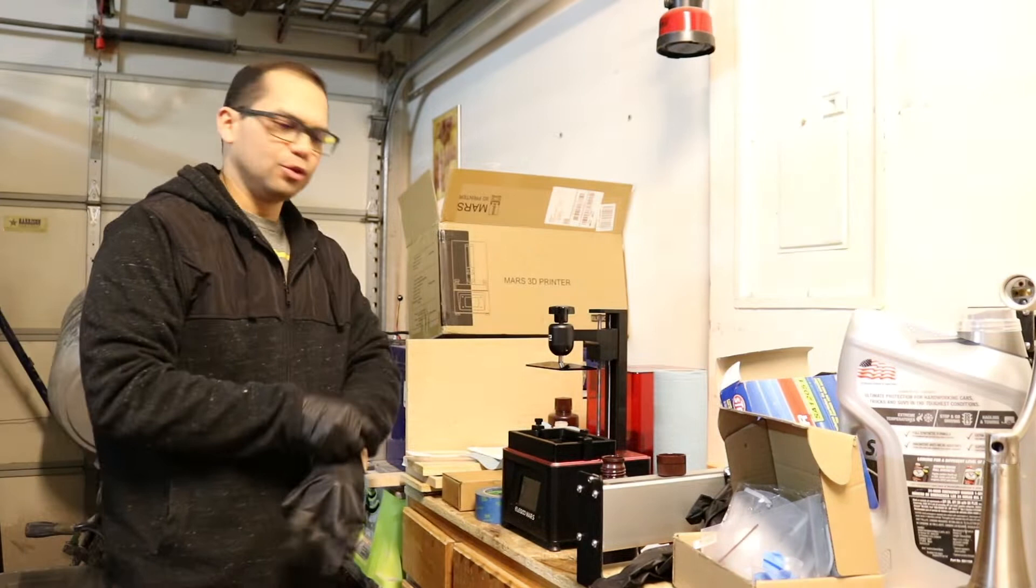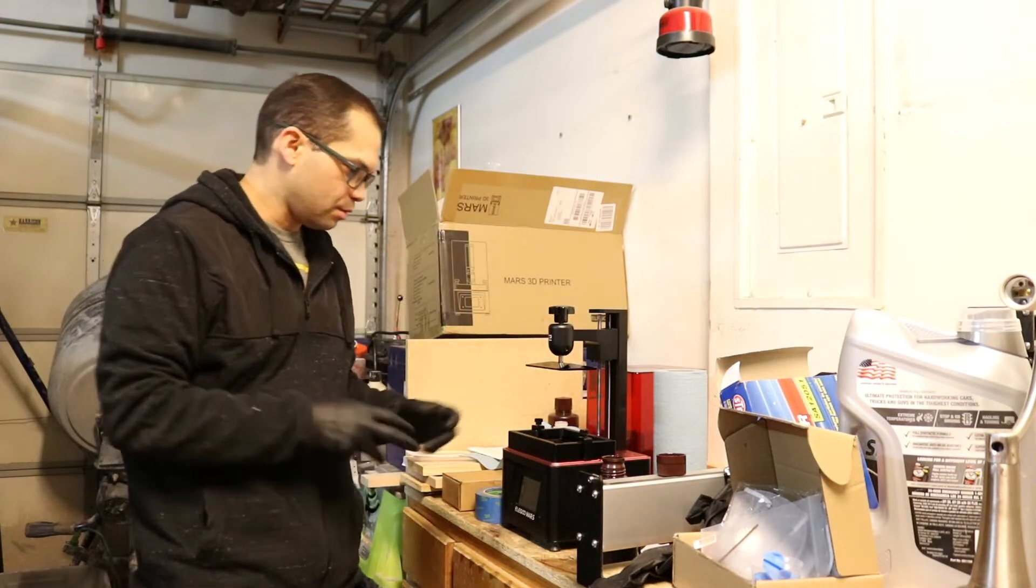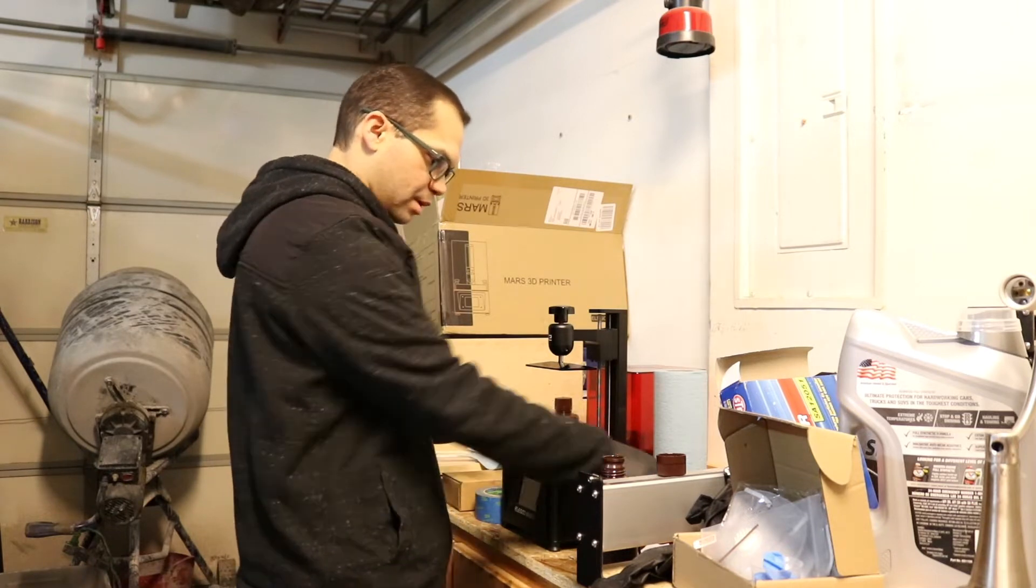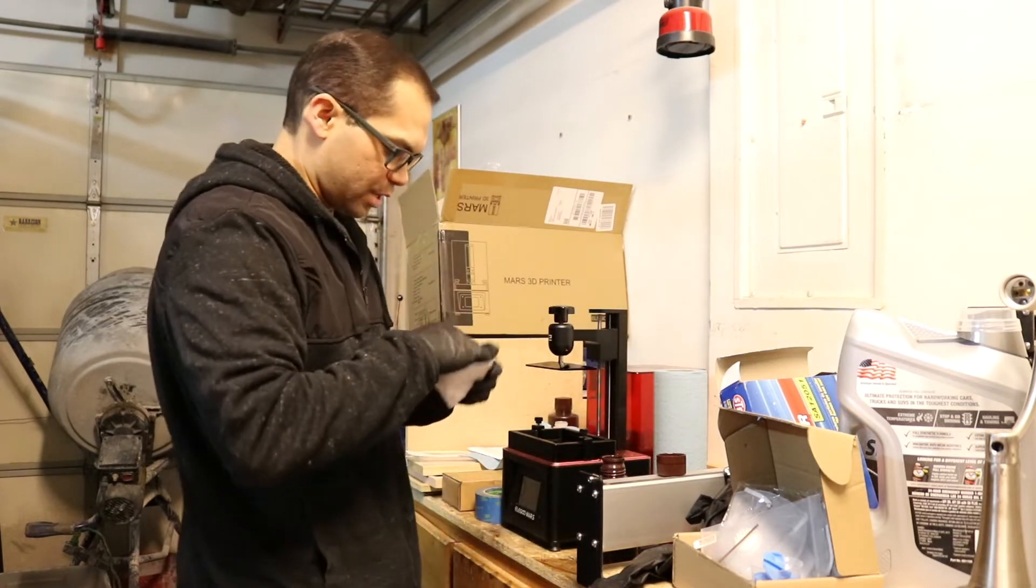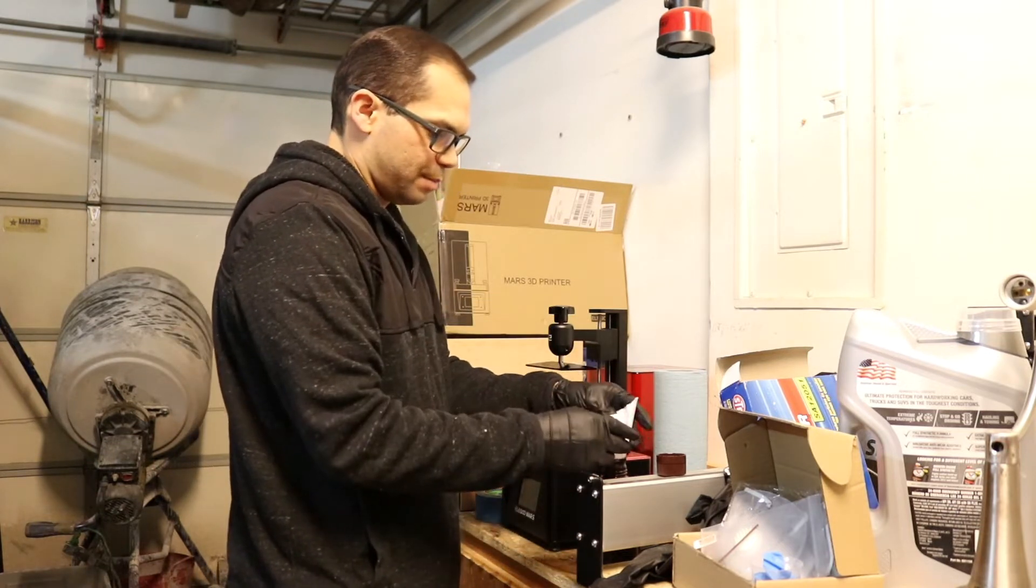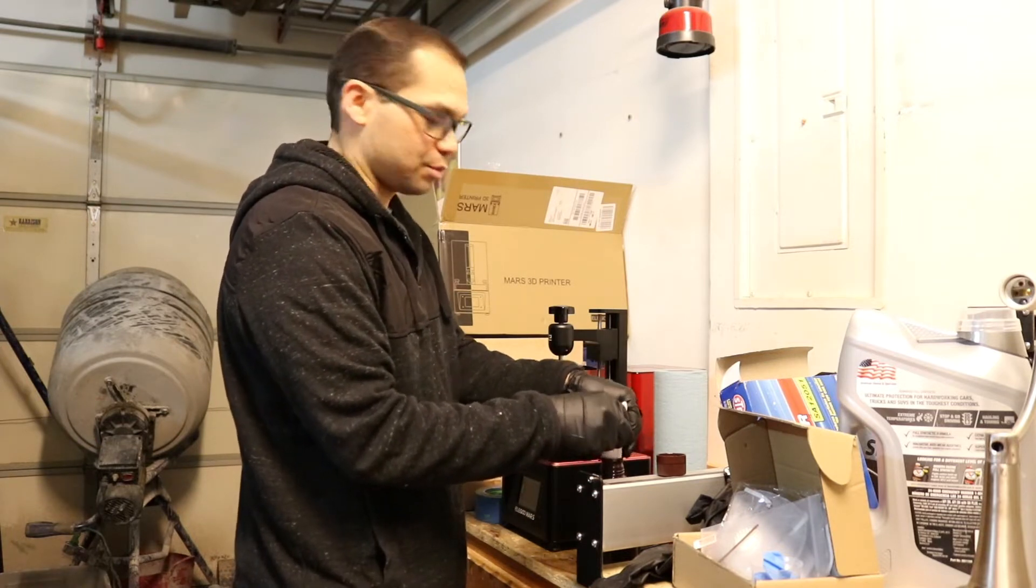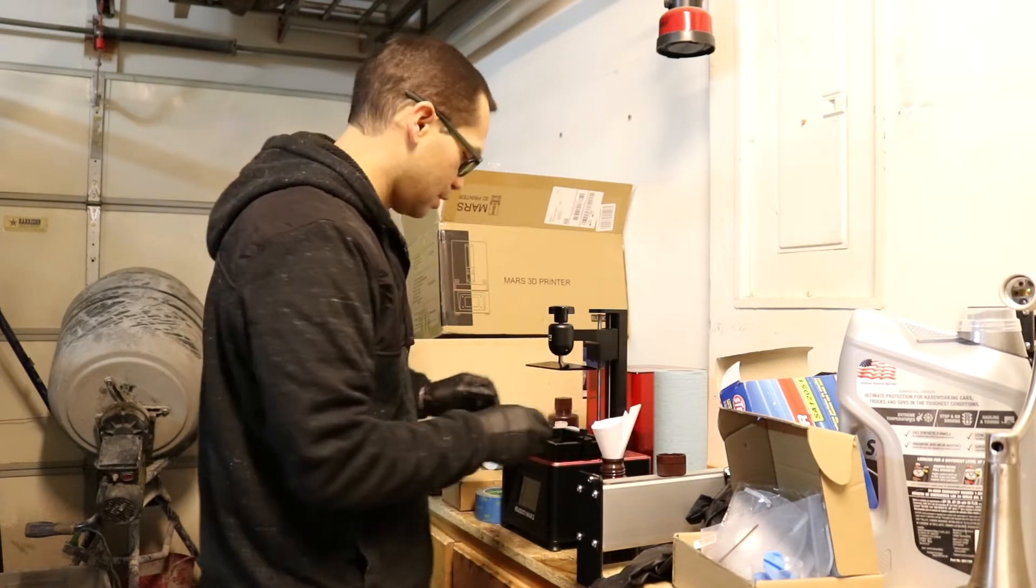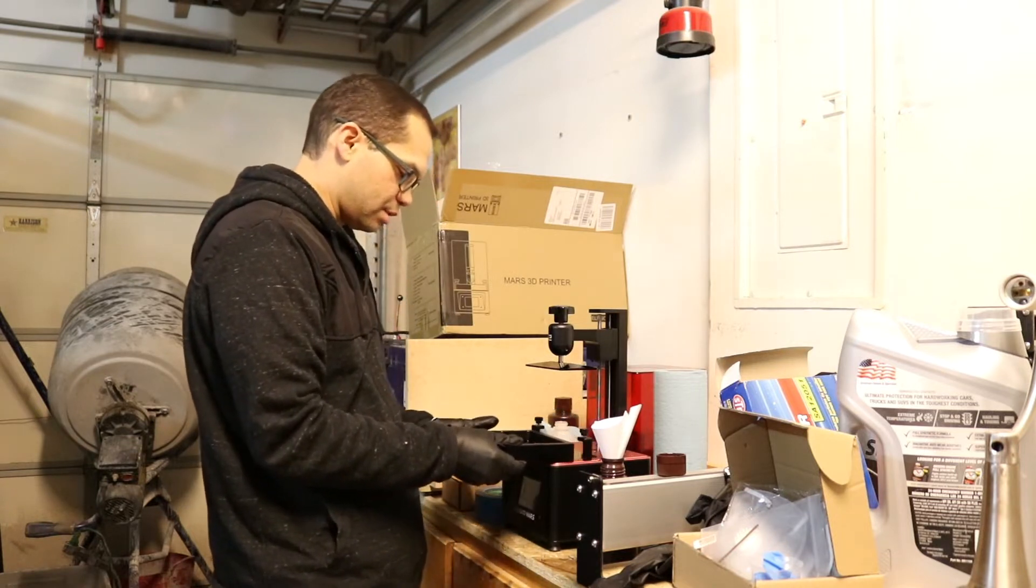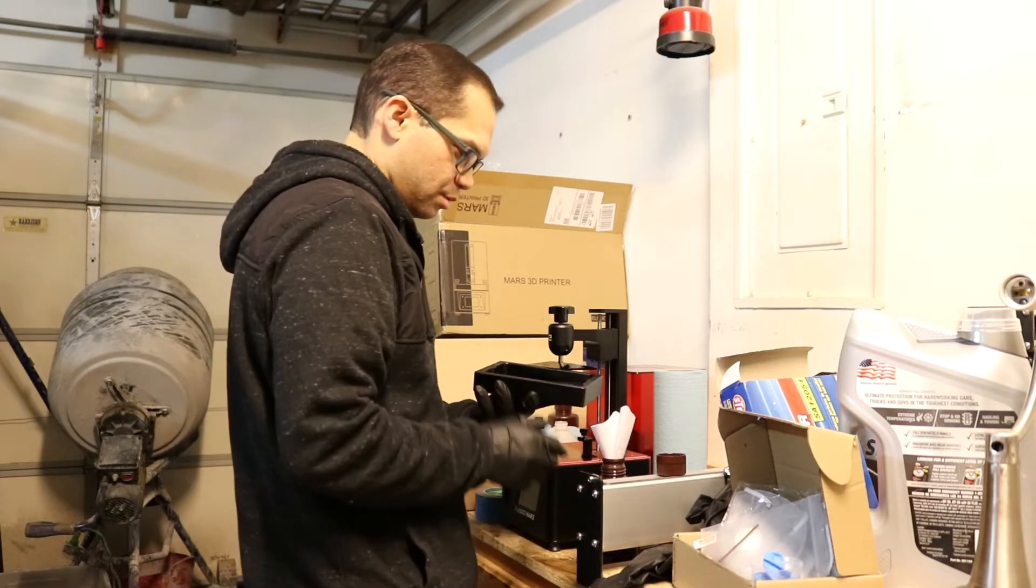So I just picked up this Elegoo Mars printer and I am completely struggling with it. I don't know why it does not want to adhere to the print bed. But the point of this video is to show you how to easily remove the failed print from the FEP film. At least I think that's what it's called. Anyhow, I'm going to take this out and I'm going to pour the resin that I did not use back into the bottle through the filter.